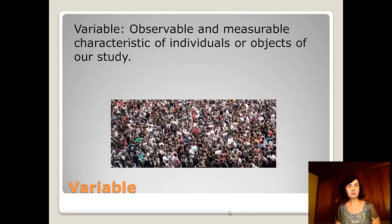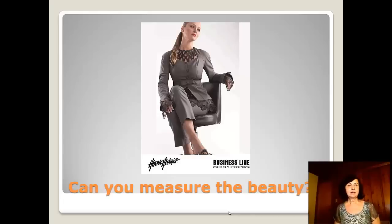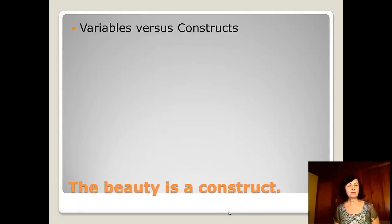A variable is any observable and measurable characteristic of individuals or objects in our study. For example, the height of this model is a value of the variable 'height' for all models we study. Some characteristics aren't measurable, such as beauty, intelligence, or ability. We have variables, and we have combinations of variables called constructs, such as intelligence and beauty.